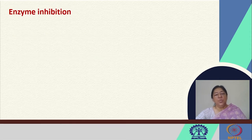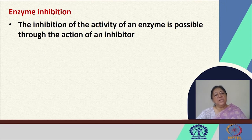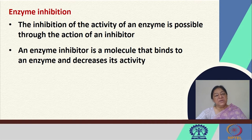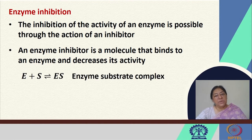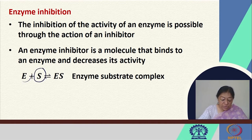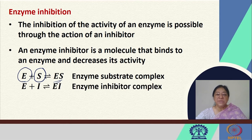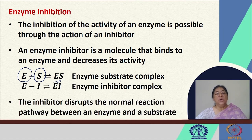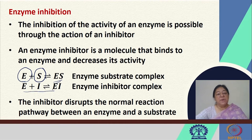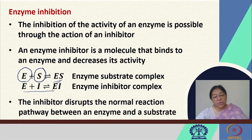When we look at enzyme inhibition, what does this term mean? The term means that the inhibition of the activity of an enzyme is possible through the action of an inhibitor. The enzyme inhibitor is a molecule that would bind to the enzyme and decrease its activity. Similar to enzyme-substrate complex formation in a pre-equilibrium step, an enzyme-inhibitor complex formation would disrupt the normal reaction pathway between an enzyme and a substrate, because part of the enzyme has gone into binding the inhibitor.